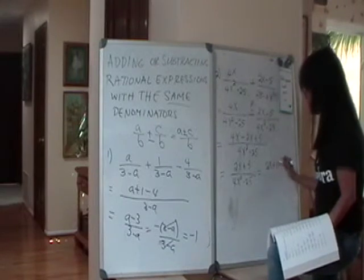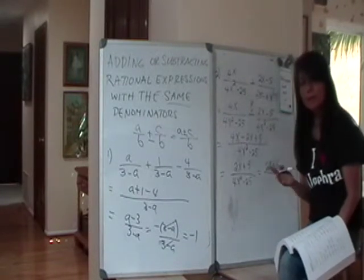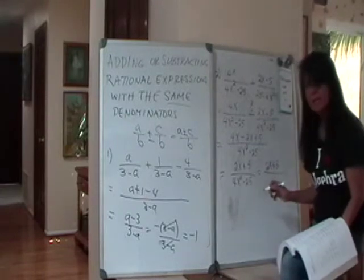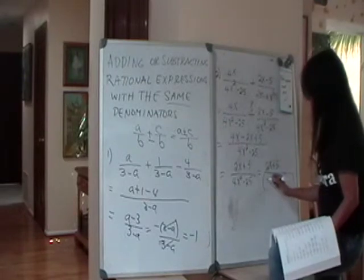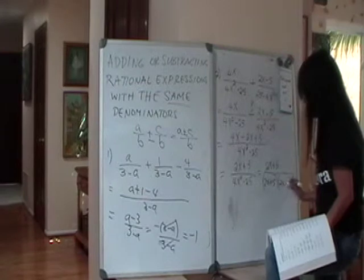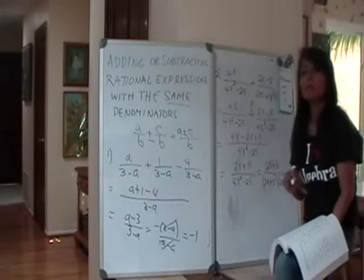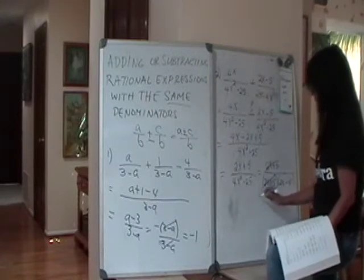2x plus 5, there's nothing to do. It's irreducible. But 4x squared minus 25, you can still factor as the difference of squares. So you'll have, and you can verify this, that this is going to be 2x plus 5, the quantity, times the quantity, 2x minus 5. And these two are the same, so you can cancel.